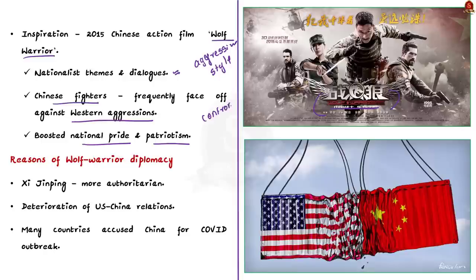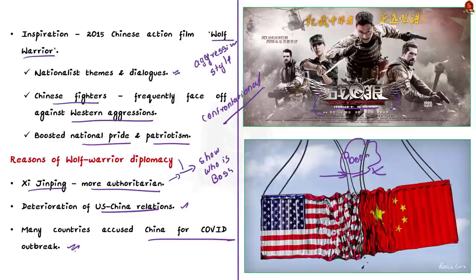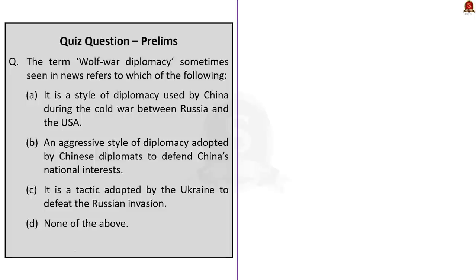Why is China using this kind of diplomacy? There are several reasons. The first reason is that Xi Jinping is more authoritarian compared to earlier Chinese leaders, and he is using aggressive diplomacy to show his power to the world. The second reason is the deterioration of US-China relations — the United States continuously targets China in trade, defense, and other aspects, so China uses Wolf Warrior Diplomacy to defend its interests. The final reason is that many countries have been accusing China for the COVID-19 outbreak, so China uses aggressive Wolf Warrior Diplomacy to defend itself from such accusations.